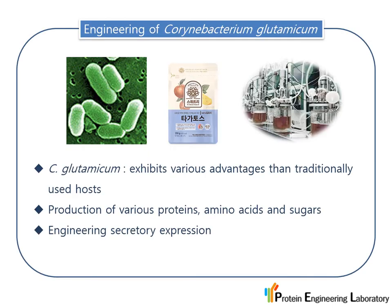We also use other bacterial species, like Corynebacterium glutamicum, for high-level production and secretion of valuable proteins and chemical materials. Corynebacterium glutamicum is one of the well-known industrial hosts and has various advantages compared to traditionally used hosts such as E. coli. In particular, it has good ability to produce high levels of amino acids and sugars, so we are engineering secretory expression systems using it.